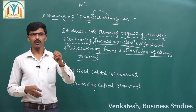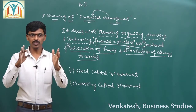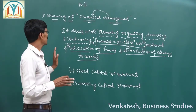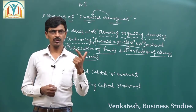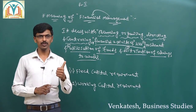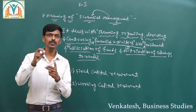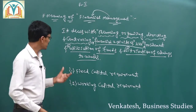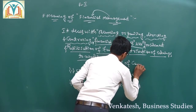Procurement means raising or collecting the required amount of finance. Utilization means proper allocation of available resources to the organization. Distribution means sharing of profit to the owners. Where financial management performs all these financial activities — that systematic process is known as financial management, dealing with planning, organizing, directing, and controlling of procuring, utilization of funds, and distribution of profit to the owners.